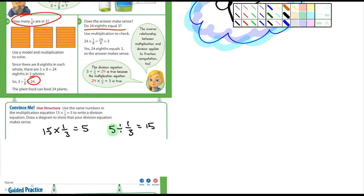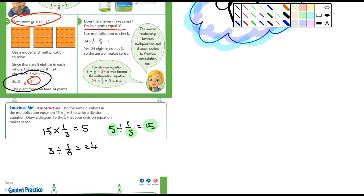Notice that five times three equals fifteen. If we look at the problem we were talking about a moment ago — three divided by one-eighth equals twenty-four — again notice that three times eight equals twenty-four. So the pattern is: when dividing by a unit fraction, multiply the whole number by the denominator.